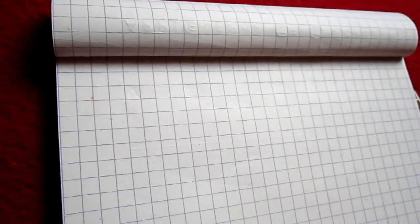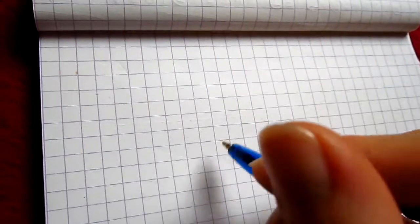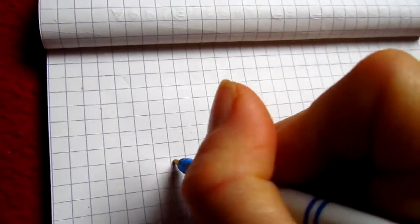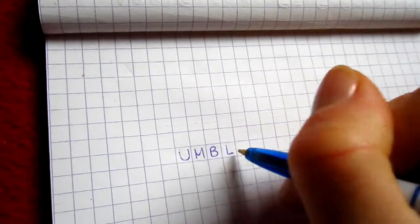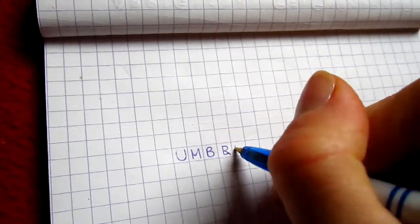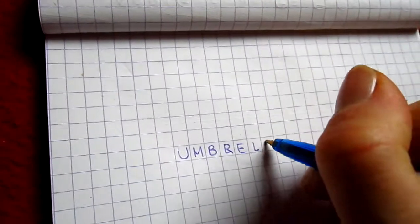So what you'll do is either I start or your child starts. So I'll start by writing a word. One letter for each little square. Umbrella.